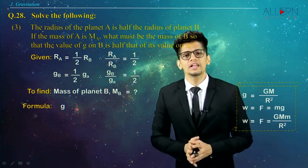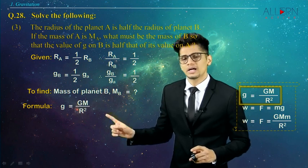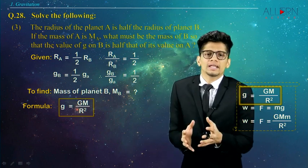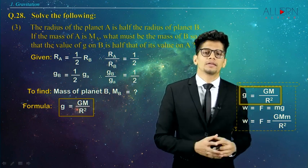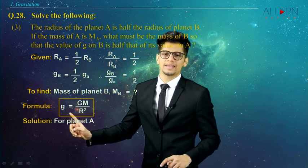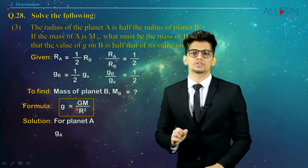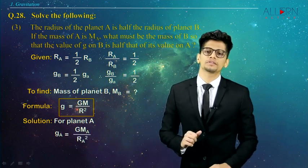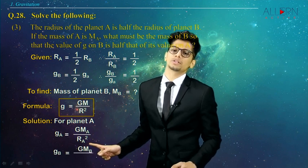The formula we will use is small g equals capital G times capital M upon capital R squared. This is the general formula. We make a formula for planet A by putting subscript A: G_A equals G·M_A upon R_A squared — this is equation 1. For planet B: G_B equals G·M_B upon R_B squared — this is equation 2.